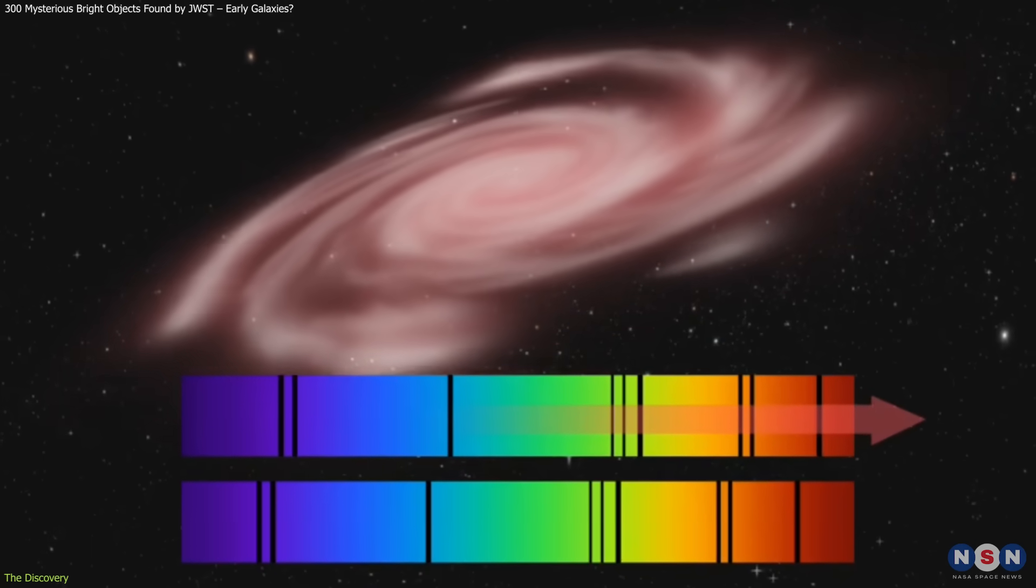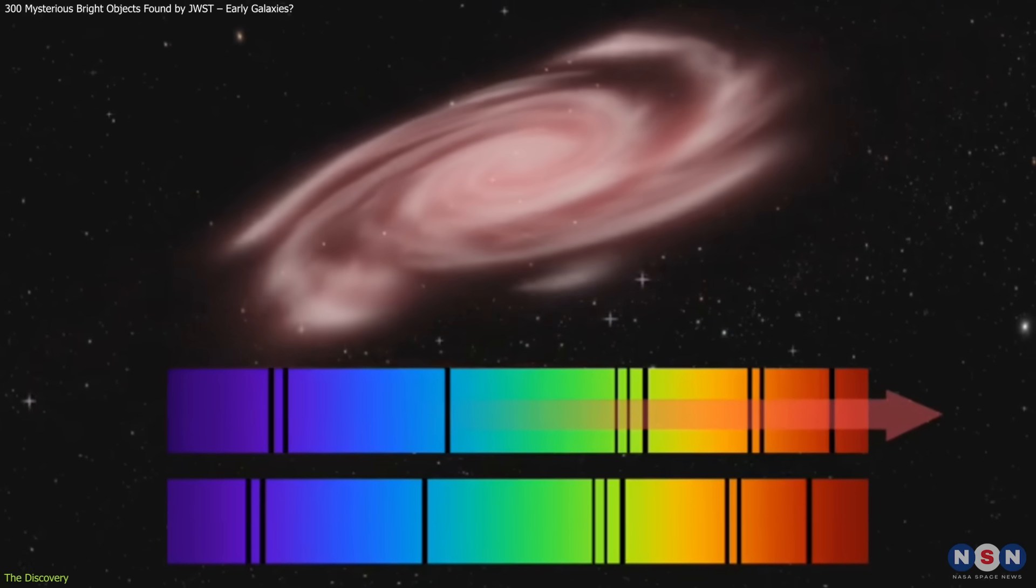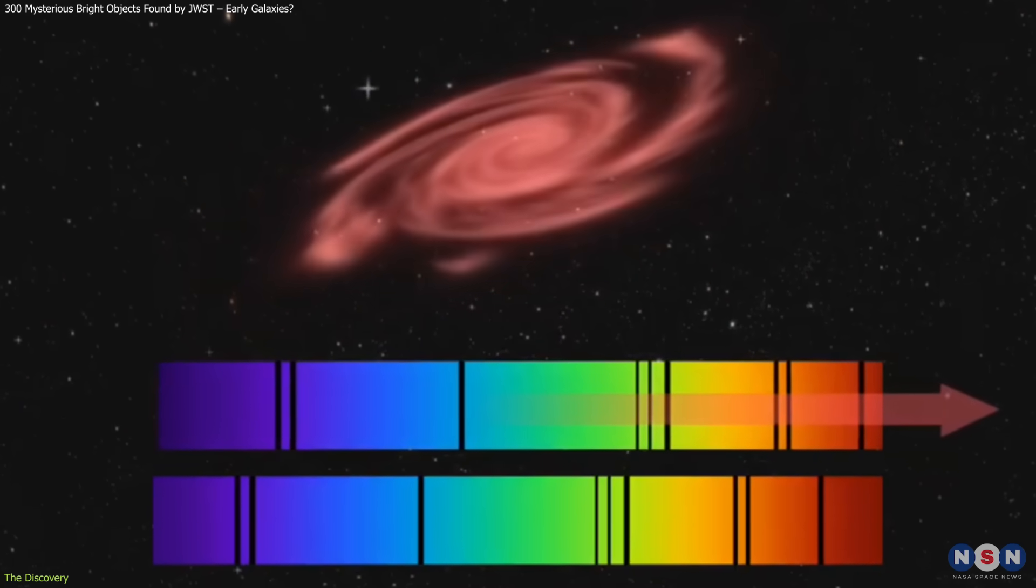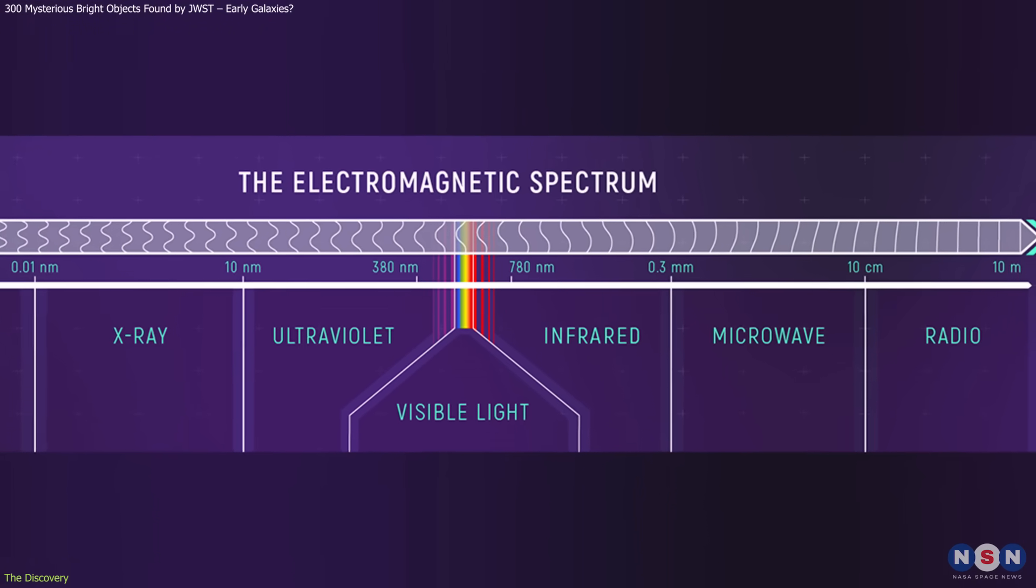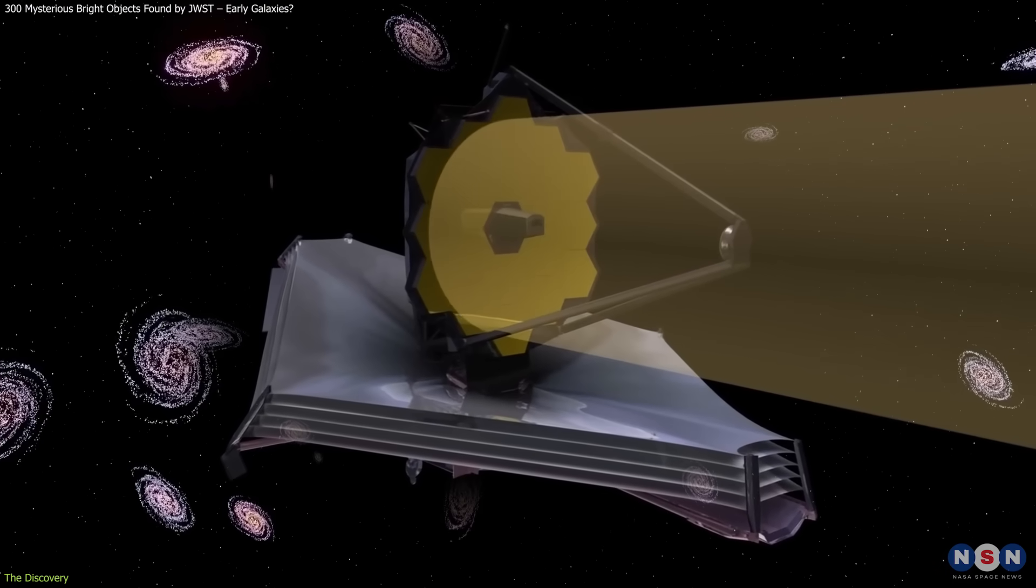Because the universe has been expanding for over 13 billion years, light from extremely distant galaxies has been stretched to longer wavelengths in a process called redshift. This shift moves the light from visible wavelengths into the infrared, which JWST is optimized to detect.